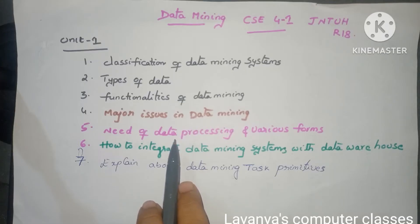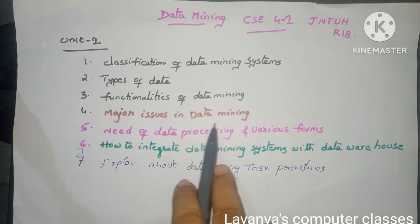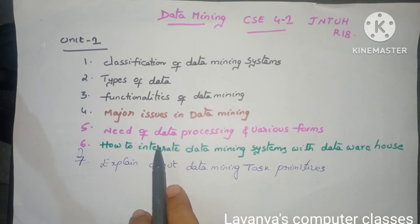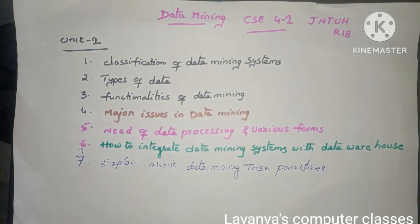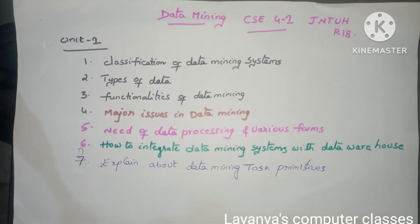Next, explain about major issues in data mining. Then, explain the need of data preprocessing and various forms of data preprocessing — there are different variations of this question such as explain the need or explain the various forms, both are important. Next, how to integrate data mining systems with data warehouse — the combination of data mining systems with data warehouse. Finally, explain about data mining task primitives, which is also an important question.